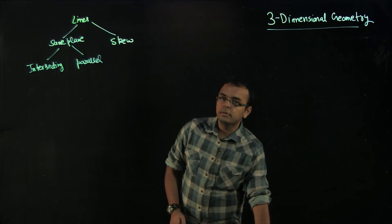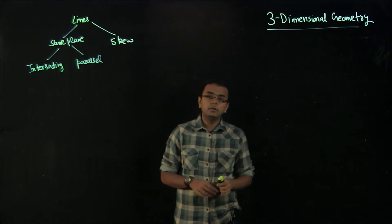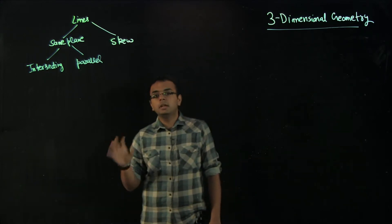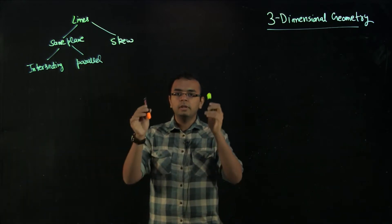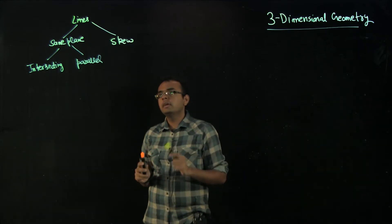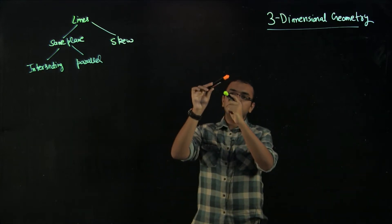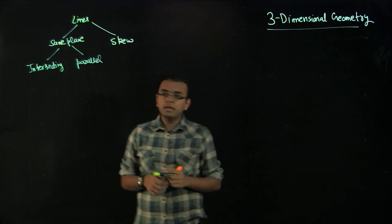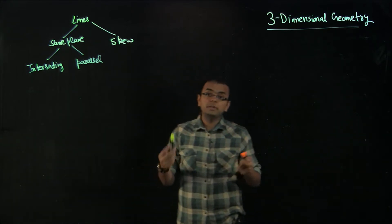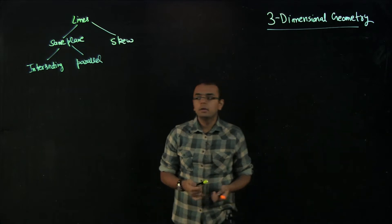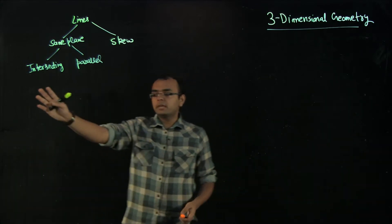Let us imagine that there are two lines in 3D. In two dimensions, lines were either intersecting or parallel, but in 3D there are more types. If the lines are in the same plane, they would either be intersecting or parallel. However, there could also be a case when the lines are not in the same plane — these are called skew lines. In reality most lines in 3D would be skewed; they will never intersect and they are not even parallel.